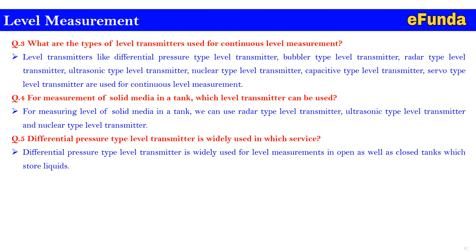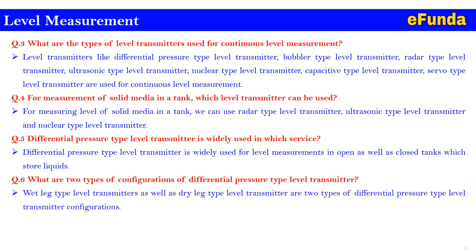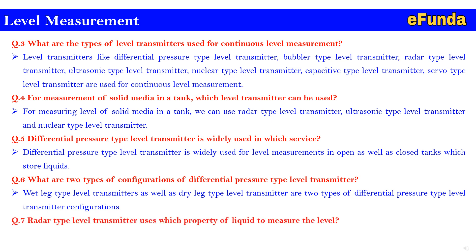Question 6: What are the types of configurations of a differential pressure transmitter type level transmitter? Wet leg type and dry leg type level transmitter are the two types of differential pressure transmitter configurations being used.